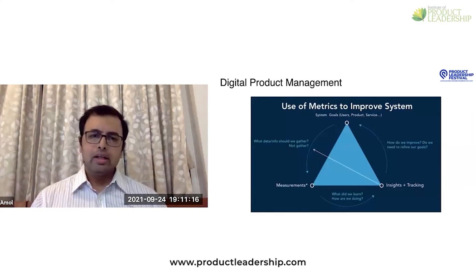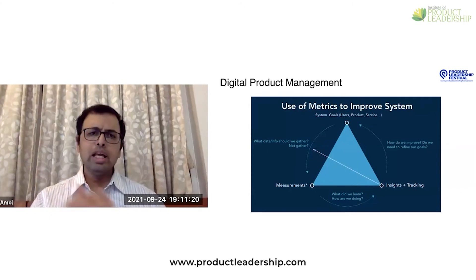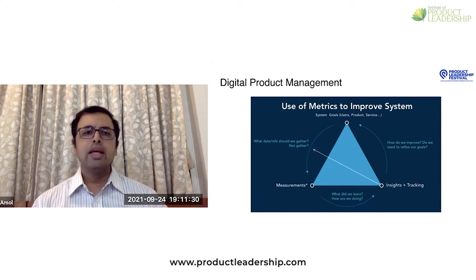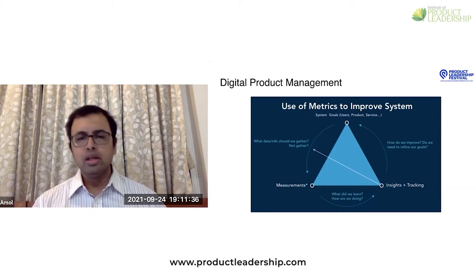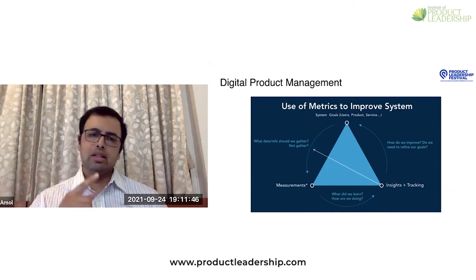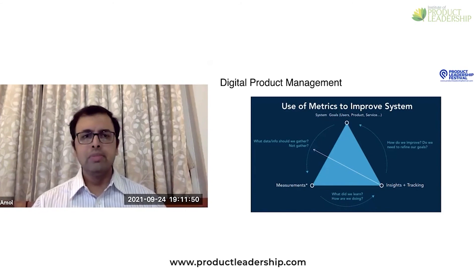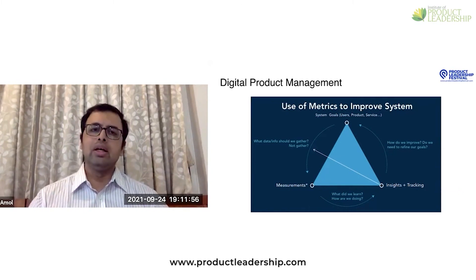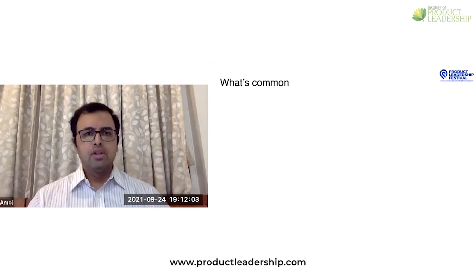This diagram shows how metrics can be used to improve the system. We start with system goals, users, and the product or service, then determine what data to gather. From the measurements, we learn how we are doing. We gain insights and track them to understand how to improve. We then refine our goals, and the cycle continues. Examples include analyzing drop-offs and using customer data to identify preferences.